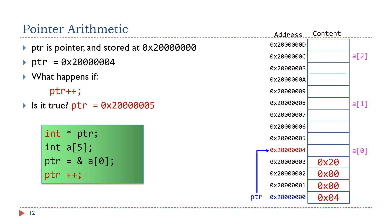Now let's look at a different example. Suppose ptr points to the beginning of an integer array. If we increment the value of ptr by 1, will the value of ptr be 0x2000005? The answer is no. The value of ptr will be 0x2000008, which is the memory address of array element a[1]. When we run ptr++, the value of ptr will be incremented by 4, because each integer takes 4 bytes in memory.